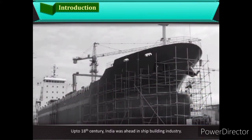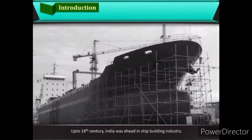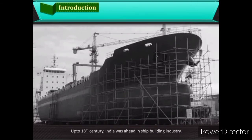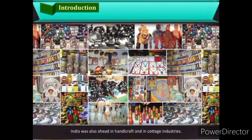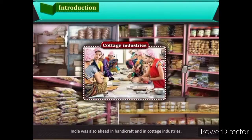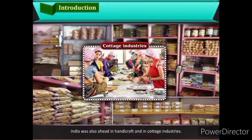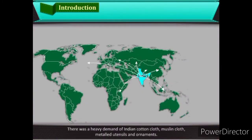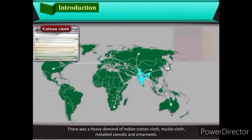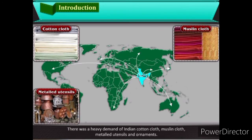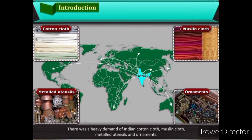Up to the 18th century, India was ahead in the ship-building industry. India was also ahead in handicrafts and cottage industries. There was a heavy demand of Indian cotton cloth, muslin cloth, metal utensils and ornaments.